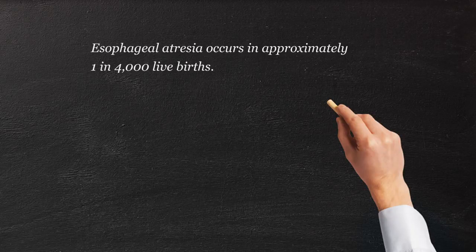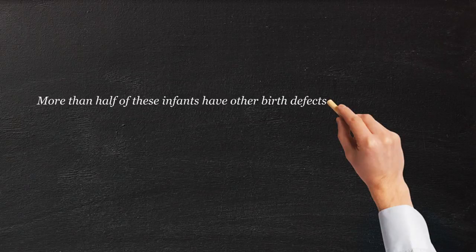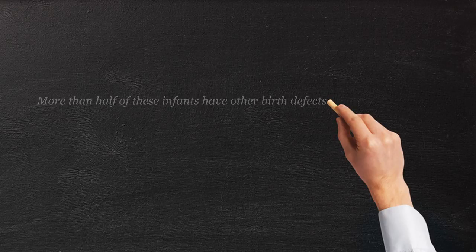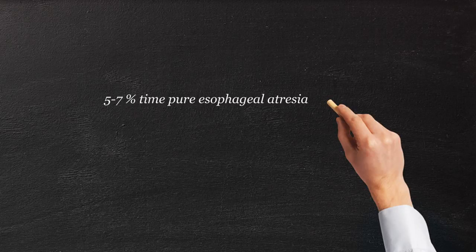Therefore, we make a diagnosis that there's a communication between the trachea — the air tract — and the esophagus — the digestive tract. That element is called a tracheal esophageal fistula. A fistula means a communication between two things. If we see no air at all in the stomach, then we say the patient has what we call a pure esophageal atresia, which is literally a discontinuation of the esophagus without anything communicating with it — no communication from the breathing tube. It's a pure esophageal atresia.